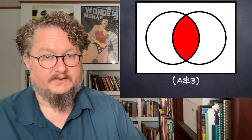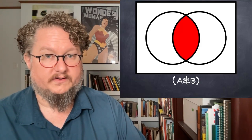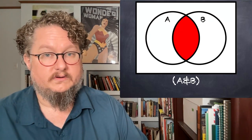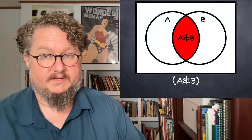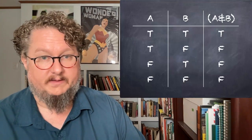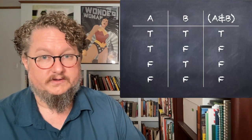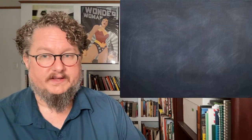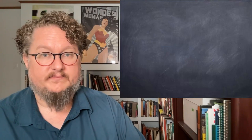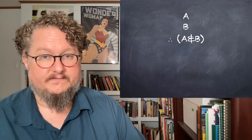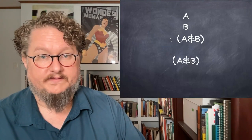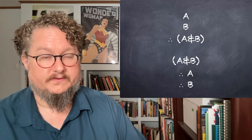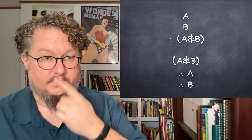The Venn diagram for conjunction shows that if the left circle represents A and the right circle represents B, the conjunction A and B is true only when both are true — the overlapping region. The characteristic truth table confirms this: only when both A and B are true is the conjunction true; every other situation it's false. As characteristic inferences: from both A and B we can infer 'A and B'; and from 'A and B' we can infer A, or we can infer B separately.